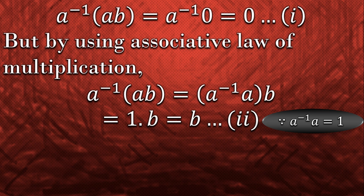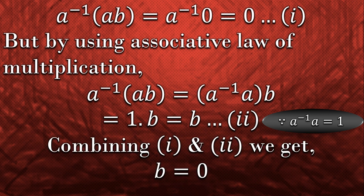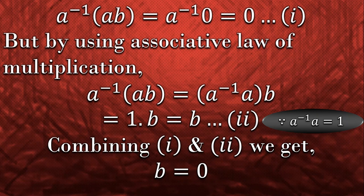Now, by equation number 1, we got a inverse ab equals to 0 and by equation number 2, we got a inverse ab is equal to b. So combining both of these equations, we got b equals to 0, which is exactly what we want to prove.